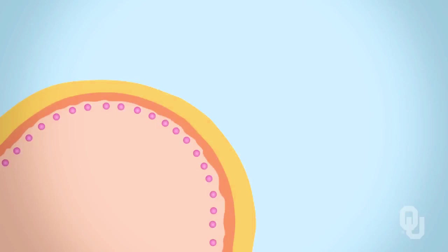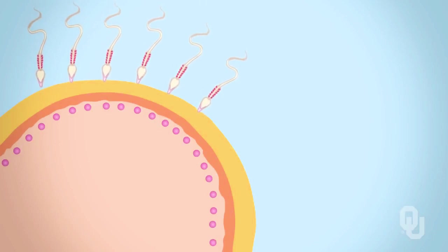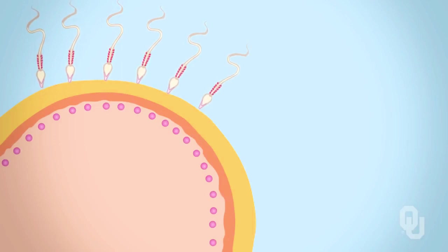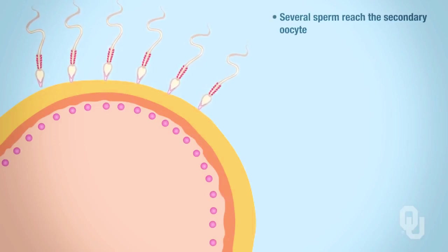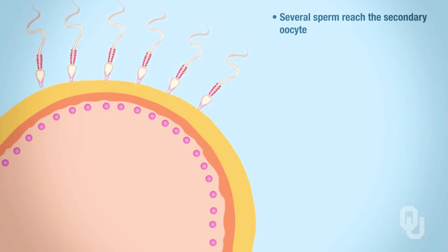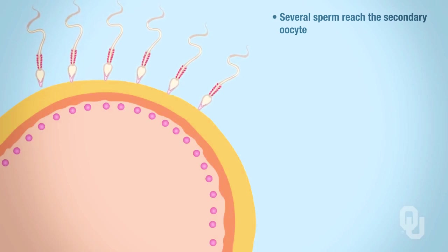How does the sperm penetrate? There's a whole bunch of sperm that actually reach the ovum. For every ejaculation, there's anywhere from 50 to 500 million sperm that get released, so a whole bunch of sperm can actually reach the ovum. Once they do reach the secondary oocyte—that's actually the more correct term—this is when the acrosomal reaction begins.